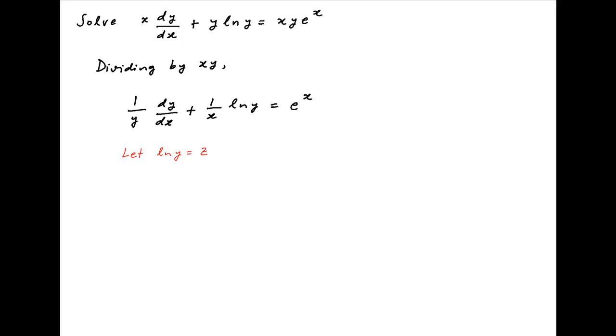Now let ln y be equal to z. Taking the derivative of both sides with respect to x, we get 1 upon y times dy upon dx is equal to dz upon dx.